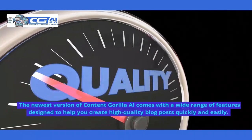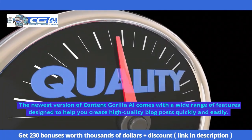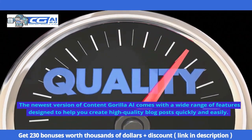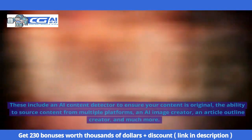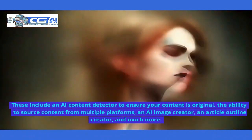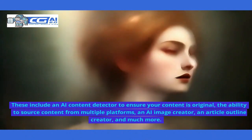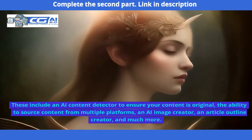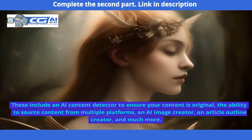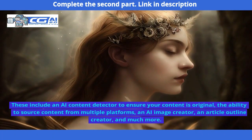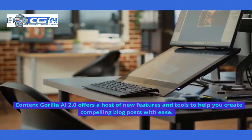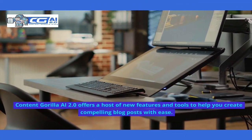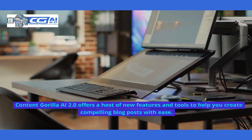The newest version of Content Gorilla AI comes with a wide range of features designed to help you create high-quality blog posts quickly and easily. These include an AI content detector to ensure your content is original, the ability to source content from multiple platforms, an AI image creator, an article outline creator, and much more. Content Gorilla AI 2.0 offers a host of new features and tools to help you create compelling blog posts with ease.